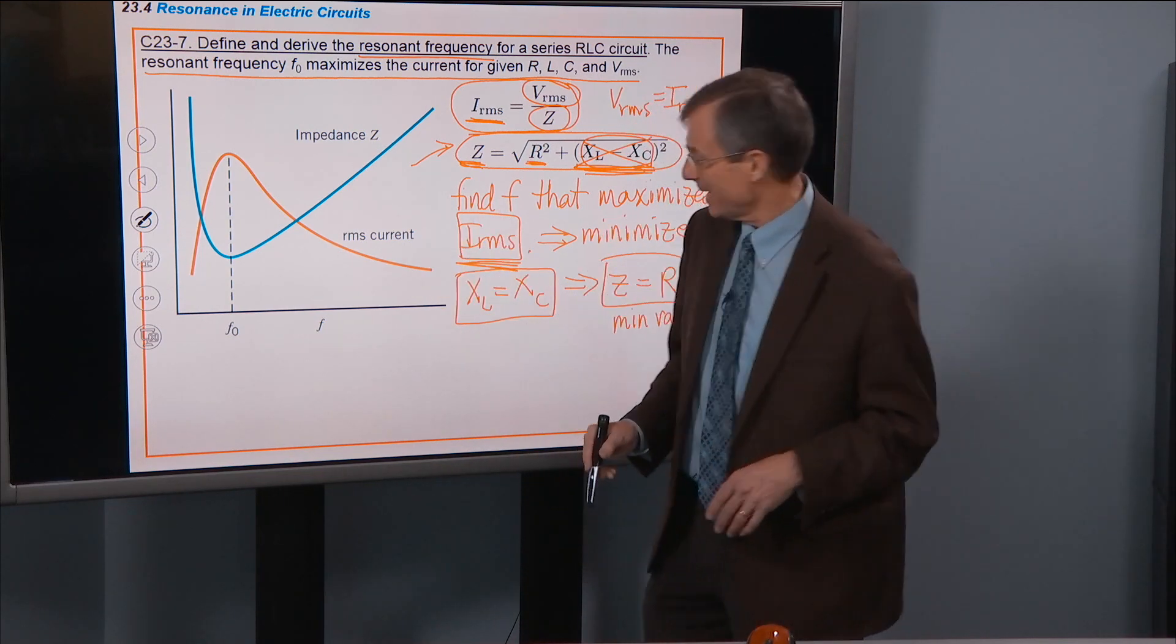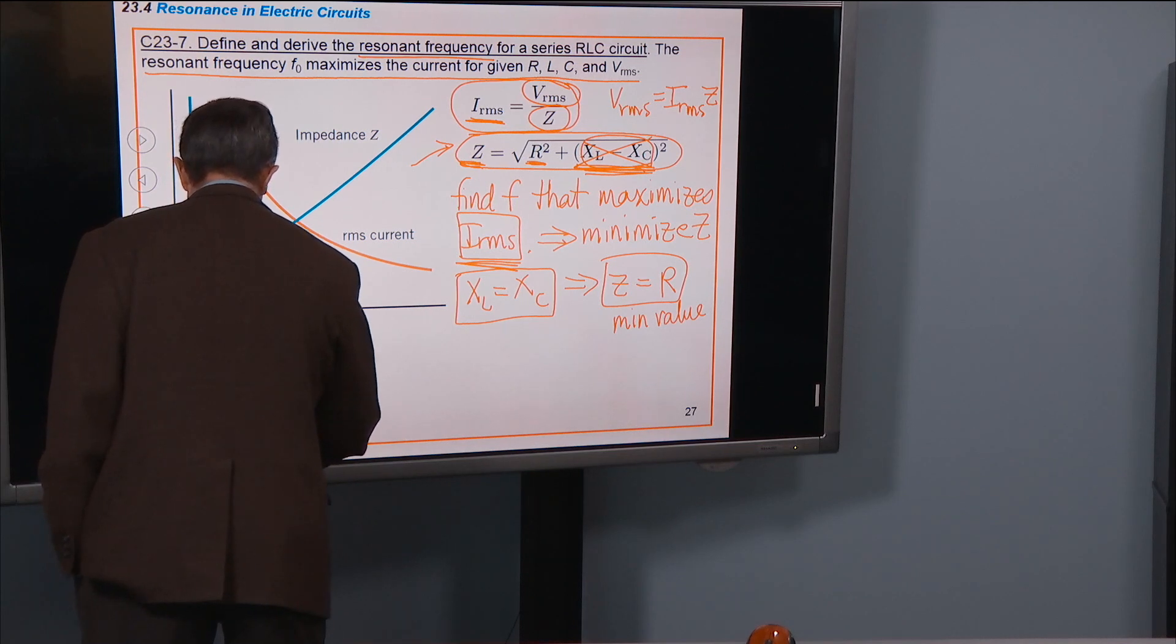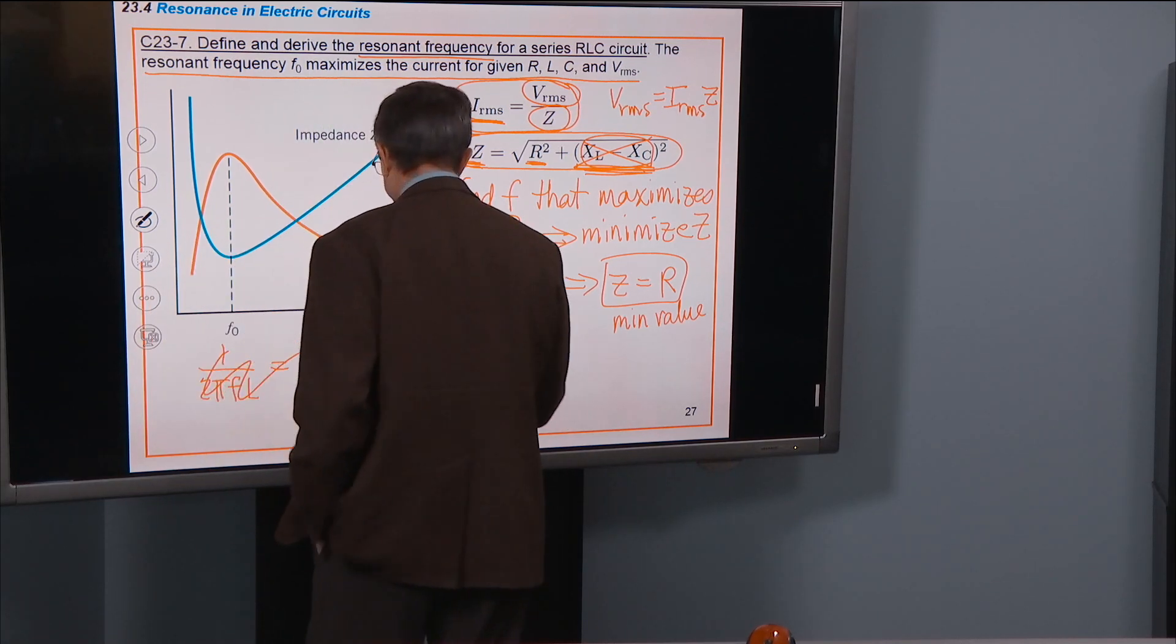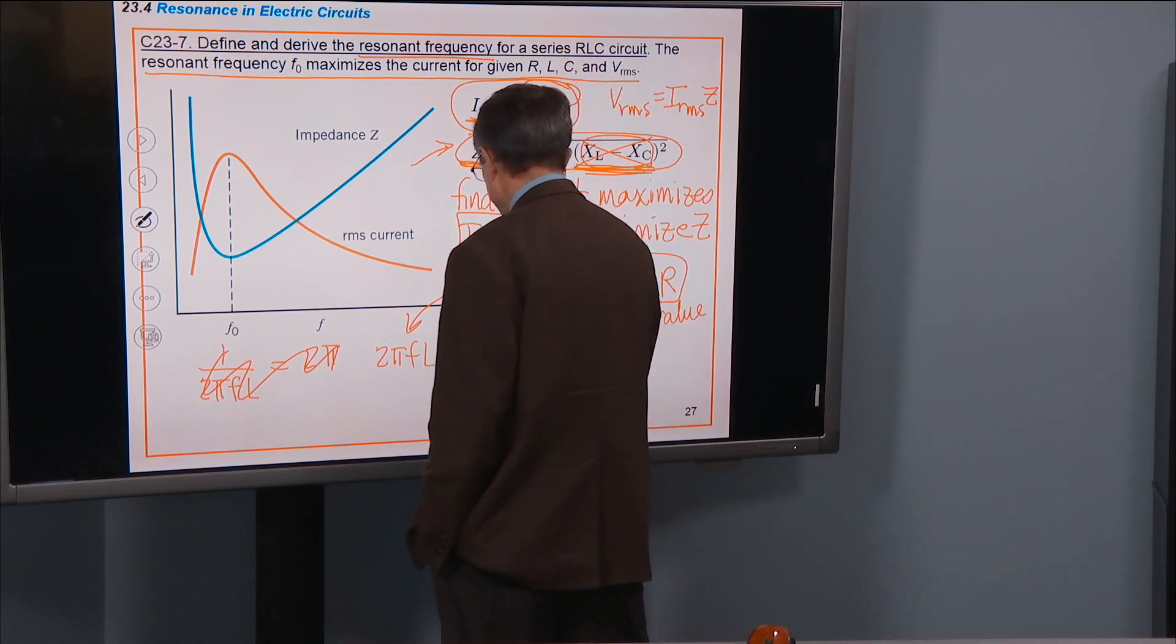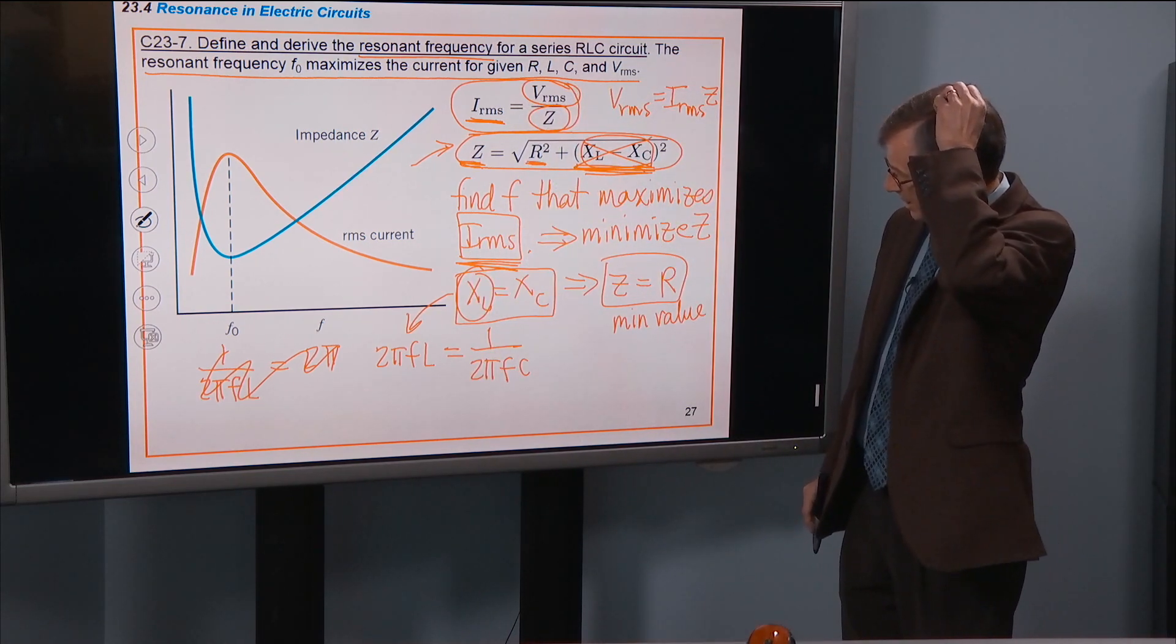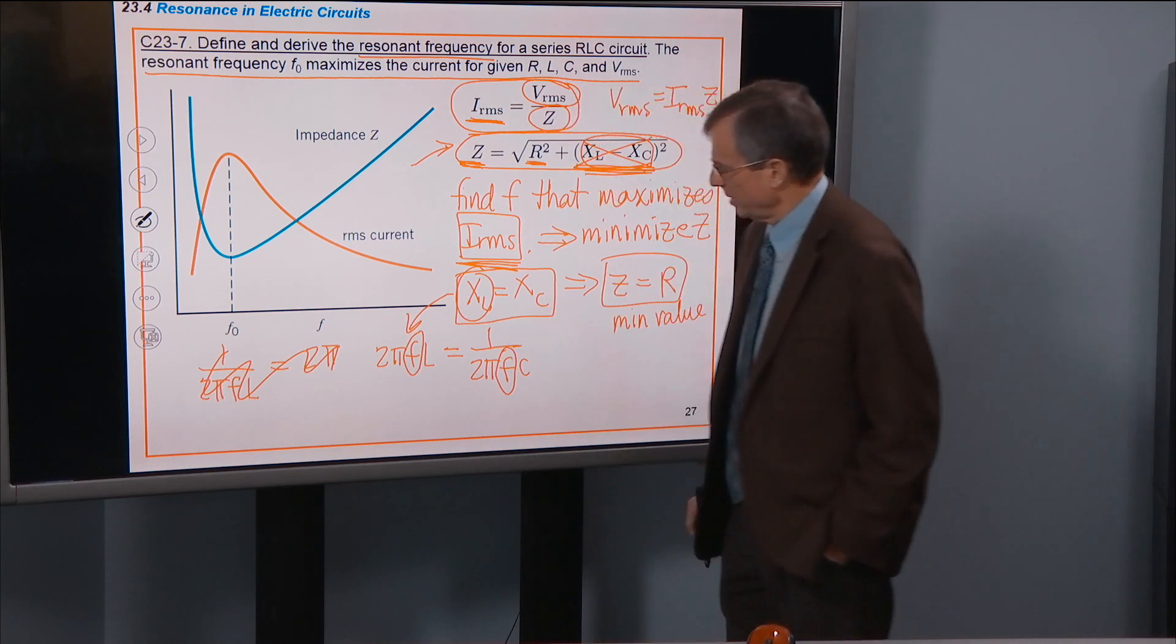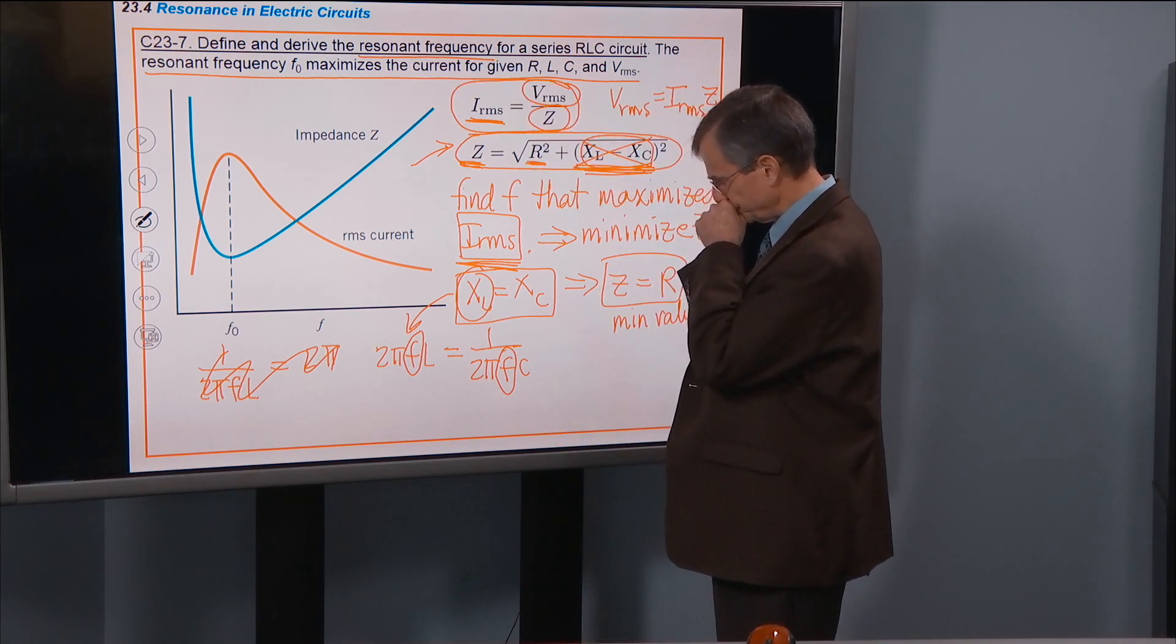So we're just faced with finding the frequency that corresponds to XL equaling XC. Well, fortunately we know what XL is. And we know what XC is. What's XL? XL is 1 over 2πFL. What's XC? What's XC? Well, it's... I'm sorry. XL, I got those mixed up. XL is 2πFL. That's XL. And XC is 1 over 2πFC. Okay? Now we're trying to find the frequency that this occurs at. Where do we have frequencies in this equation? I've got one right here. And I've got one right here. I want to solve for the frequency. That's my job. The resonant frequency.